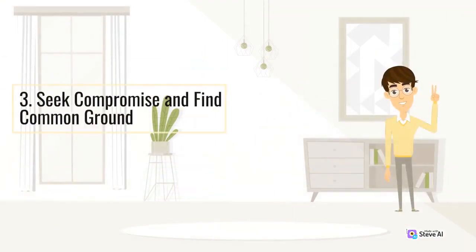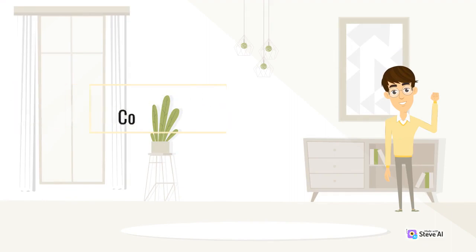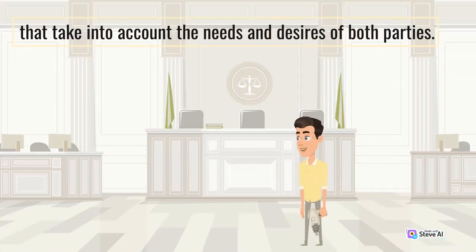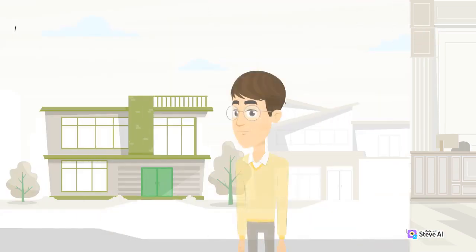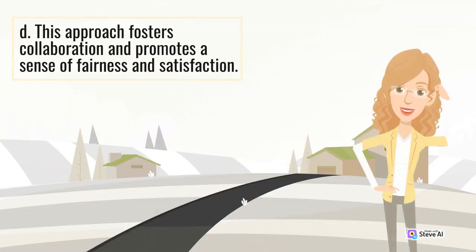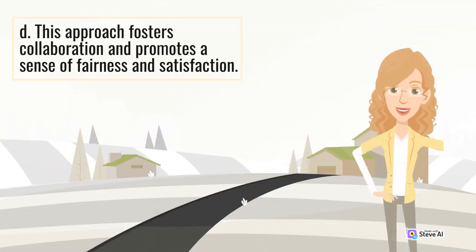3. Seek Compromise and Find Common Ground. In some conflicts, finding a compromise is necessary to reach an agreement. Compromise involves each party giving up something in order to meet halfway. It is important to explore possible solutions that take into account the needs and desires of both parties. To identify common ground, it is useful to focus on shared interests rather than differences. By focusing on shared goals and values, you can find creative solutions that satisfy both parties involved. This approach fosters collaboration and promotes a sense of fairness and satisfaction.